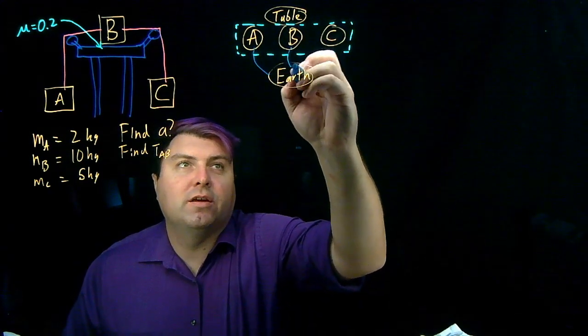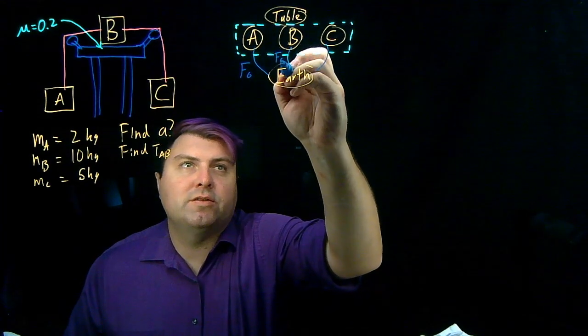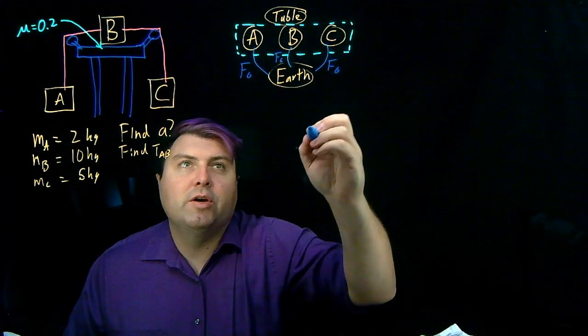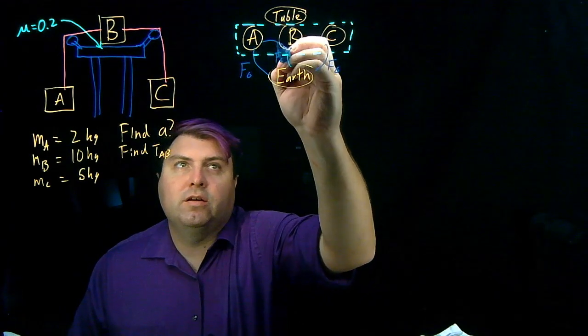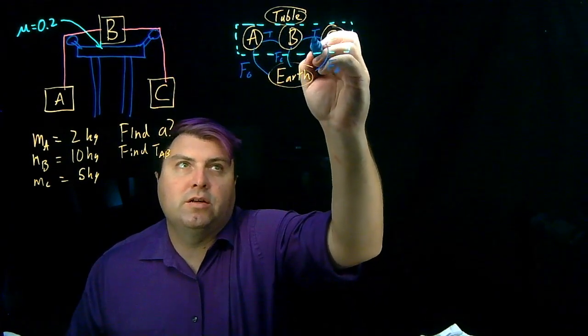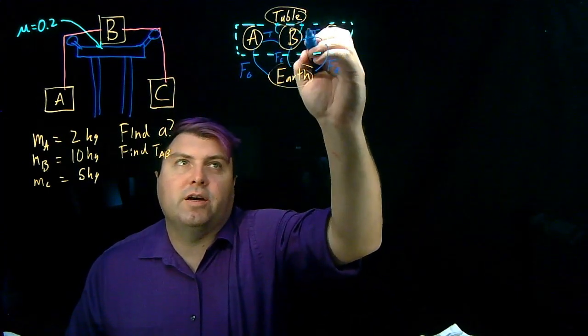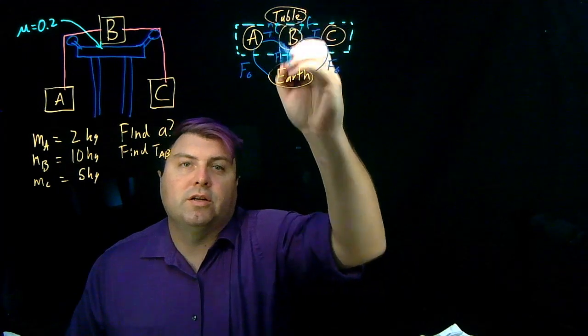Between Earth, A, B, and C, we have of course a force of gravity for all three of these. We have a tension between A and B. Tension between B and C. And then between B and the table, we have our good old friends of friction and the normal force.